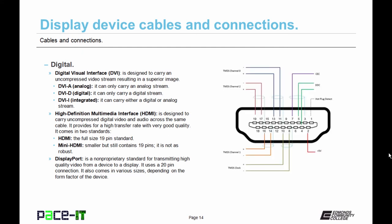Then we have the high definition multimedia interface, HDMI. It too is designed to carry uncompressed digital video, but it can also carry audio at the same time through the same cable. It provides for a high transfer rate and with a very high quality image. It comes in two standards. There is the full-size HDMI, and it uses 19 pins. Then there's the mini-HDMI. That's a smaller format, but it still contains 19 pins. Now it's not as robust as the full-size HDMI, which means that it's easier to break.